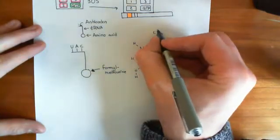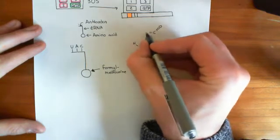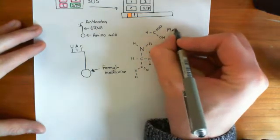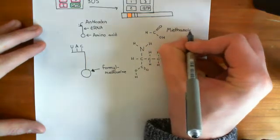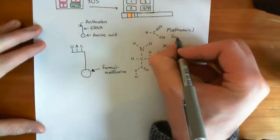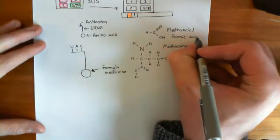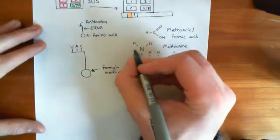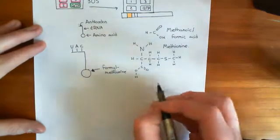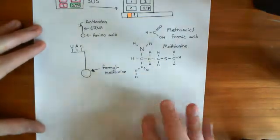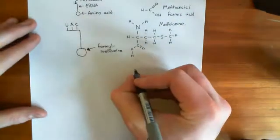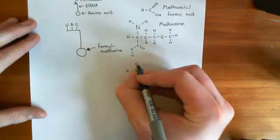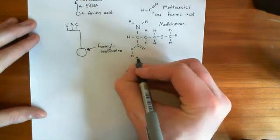What you add on in bacteria is a formic acid group. Formic acid is what chemists would now call methanoic acid — it's the old name for methanoic acid. What we do if we're going to add a formyl group onto things is we basically make an amide link between this amino group and the carboxyl group of the formic acid.